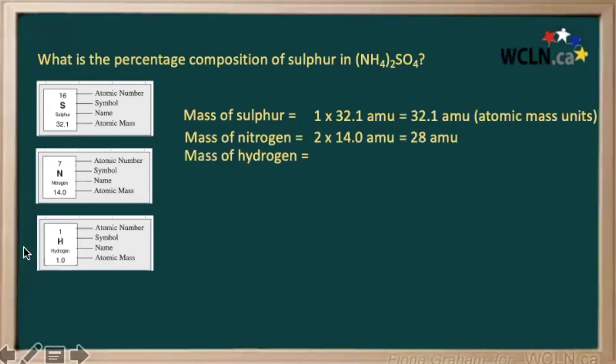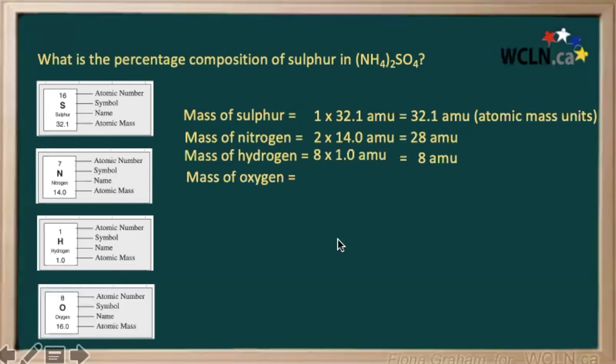Our hydrogen has an atomic mass of 1, and we have 8 atoms of hydrogen. So 8 times 1, giving us an atomic mass of 8 for our hydrogen in our compound. Finally, we have our oxygen with an atomic mass of 16, and we have four atoms of oxygen. So 4 times 16, giving us 64 for our atomic mass for our oxygen in our ammonium sulfate.